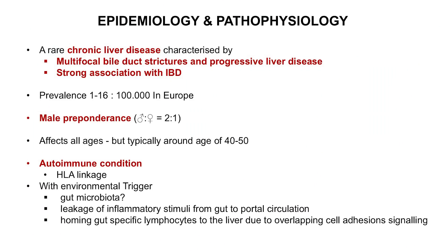And do we know what causes it? PSC has always been considered as one of the autoimmune liver diseases, despite having some atypical features such as the male preponderance and a lack of response to immunosuppression. But there is increasing evidence now to support an autoimmune cause. Some genome-wide association studies show quite strong HLA linkage that overlaps with other autoimmune diseases. So there is a genetic predisposition, but as with many other autoimmune diseases, there's often then a presumed environmental trigger.